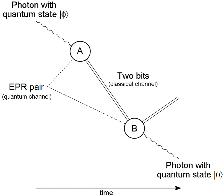Quantum decoherence can occur when one qubit from a maximally entangled Bell state is transmitted across a quantum network. Entanglement purification allows for the creation of nearly maximally entangled qubits from a large number of arbitrary weakly entangled qubits, and thus provides additional protection against errors. Entanglement purification, also known as entanglement distillation, has already been demonstrated in nitrogen vacancy centers in diamond.